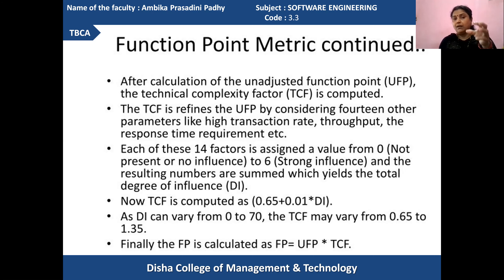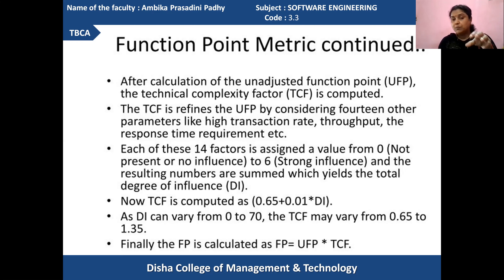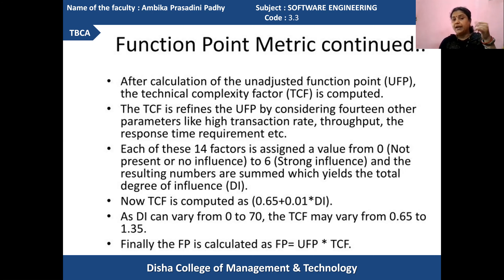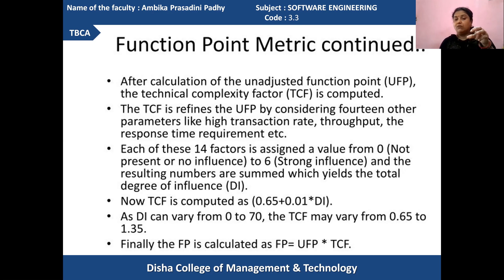The 14 parameters may be like high transaction rates, throughput rate, response time requirements, like that. Basing upon those, the technical complexity factor will be calculated, and those can be based upon the degree of influence that may come to it. If a particular factor occurs, then what is its influence — either the influence will be zero, one, two, three, or up to six.